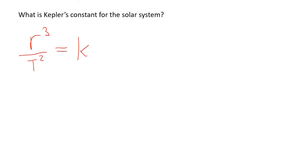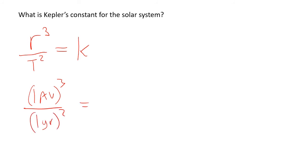You should get the same number whichever planet or orbiting satellite you use. We could make it easy by picking Earth: Earth's average distance from the Sun is one astronomical unit and its orbital period is one year, giving us one cubed divided by one squared, which is one. But the units matter — it's 1 AU³/year², which is not a proper standard-unit result.